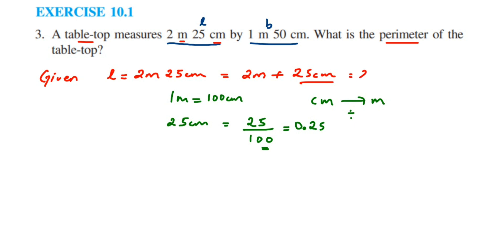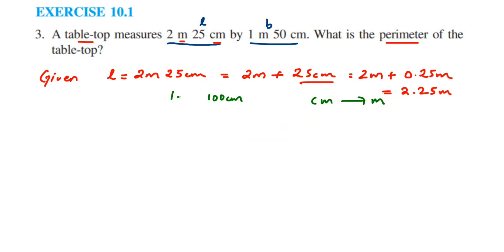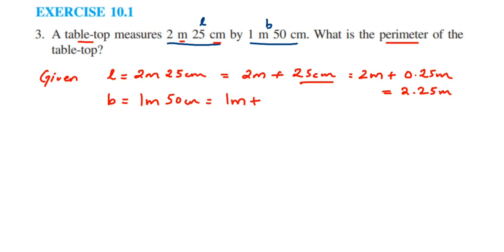So the length is 2 meter plus 0.25 meter, which equals 2.25 meter. Now for breadth: breadth is equal to 1 meter 50 centimeter, which is 1 meter plus 50 centimeter.